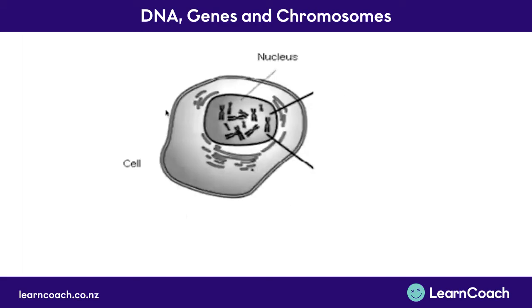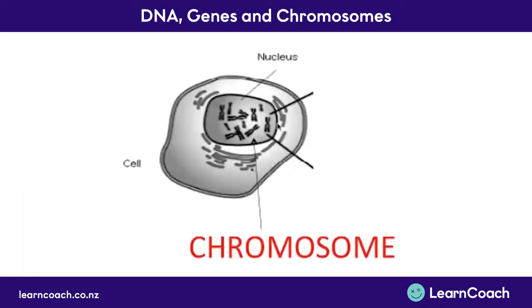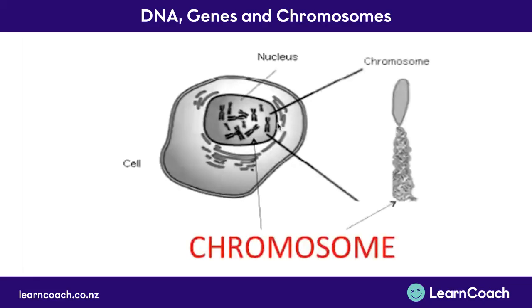All of us have cells in our bodies, and inside each of those cells is a nucleus. You can see inside this nucleus there are small worm-shaped looking things. These are called chromosomes. If we take a closer look at a chromosome, we actually see that it's a coiled up strand of DNA.